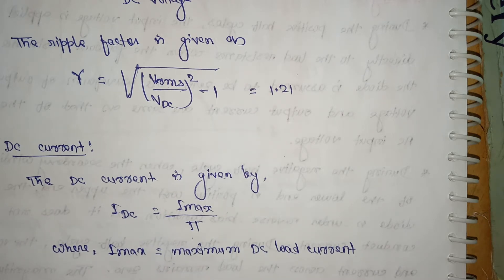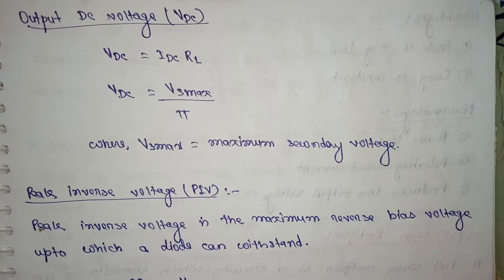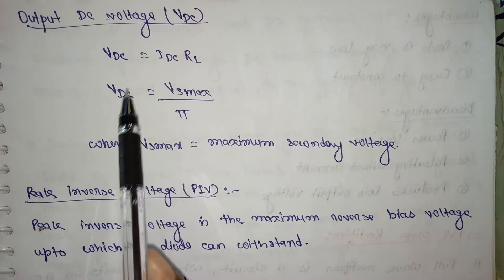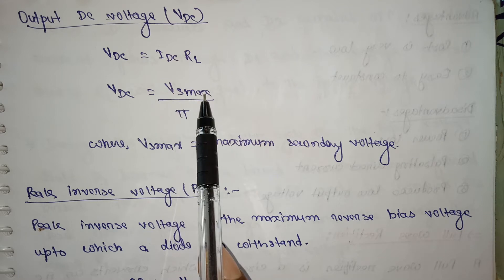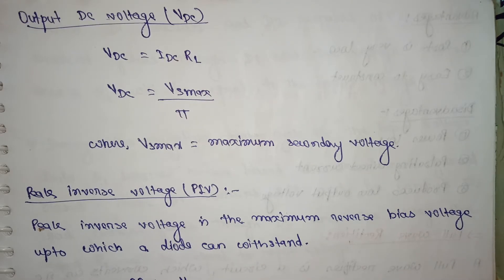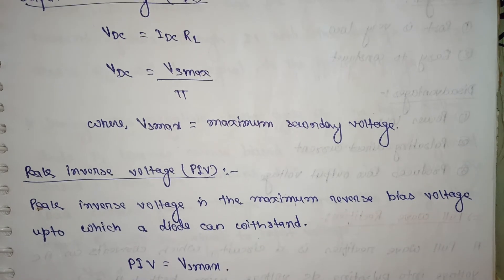Next, output DC voltage: VDC is equal to ID into RL, that is V is equal to Vmax by pi where VSmax is maximum secondary voltage. Next, peak inverse voltage: it is the maximum reverse bias voltage up to which a diode can withstand. PIV is equal to VSmax.